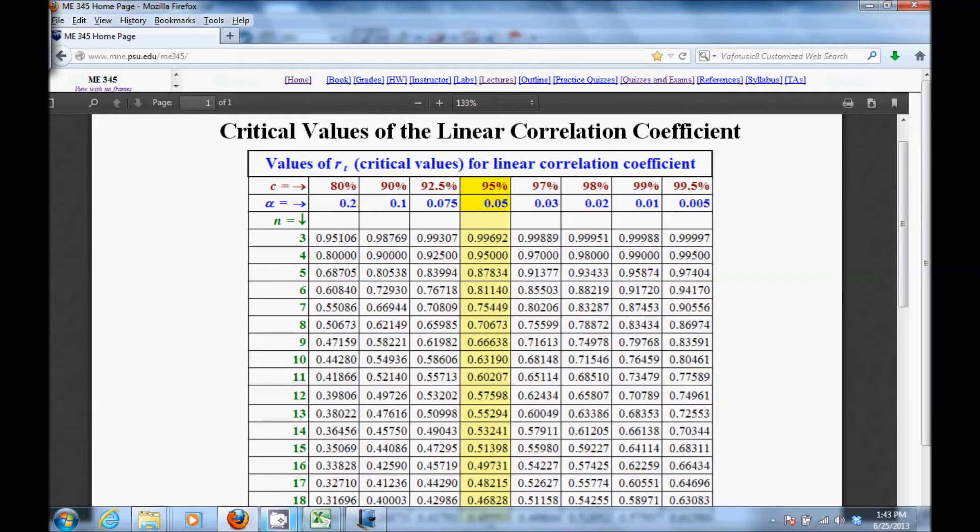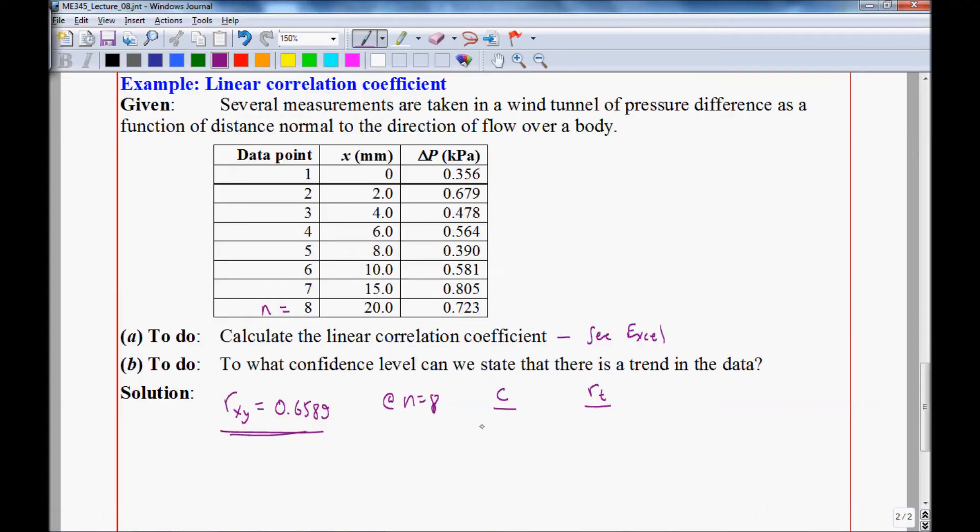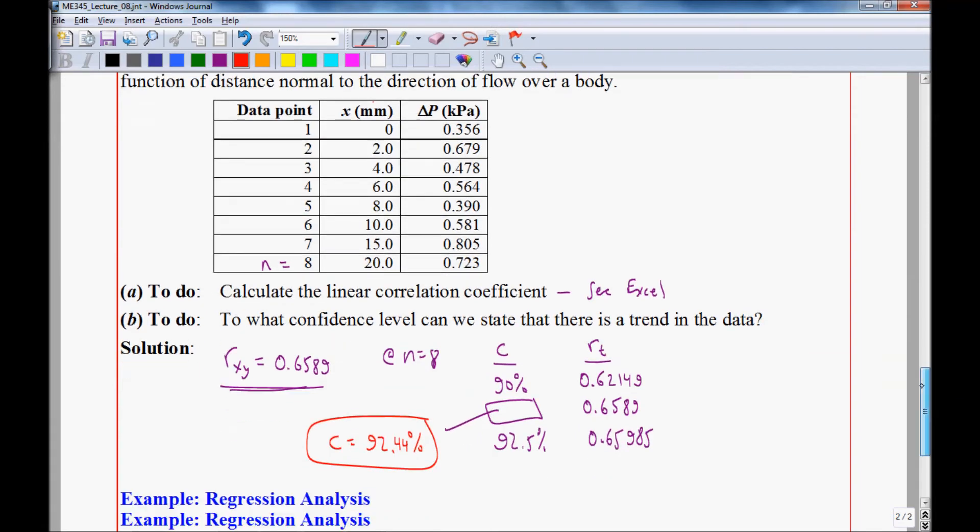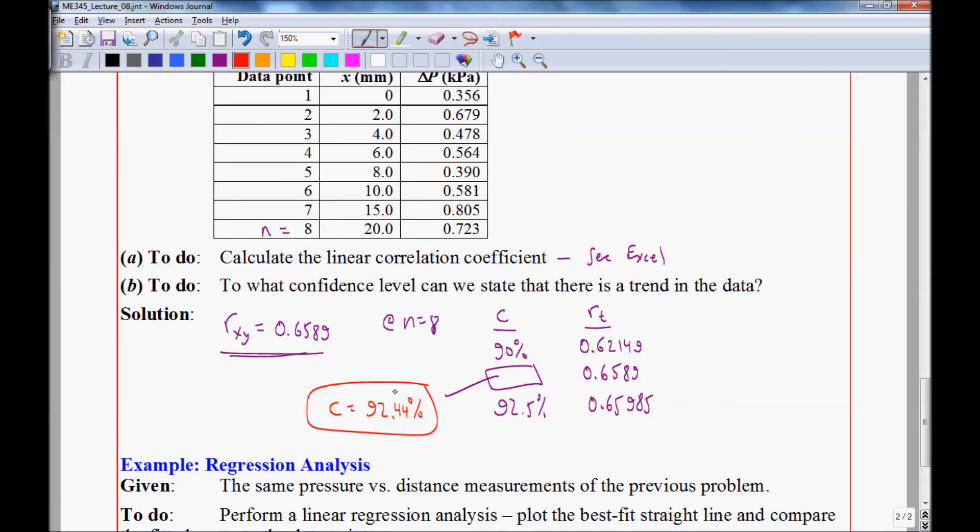So let's complete the linear interpolation. So at 90%, RT is 0.62149. At 92.5%, RT is 0.65985. Our value is 0.6589. So we need to interpolate to get this value. And when you linearly interpolate, you get C equal 92.44%. So we're 92.44% confident that there is a trend.